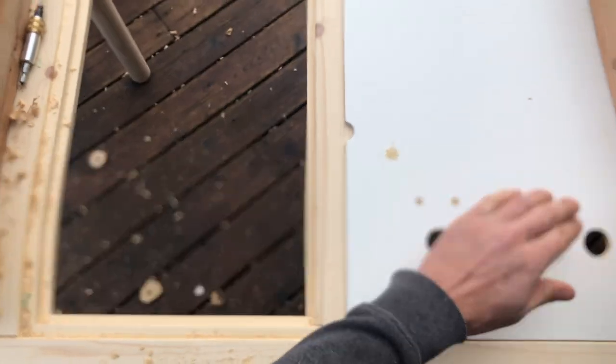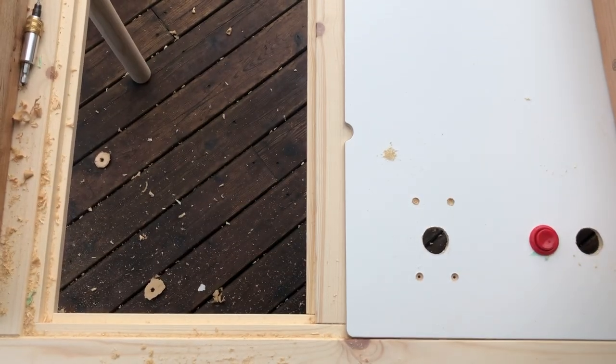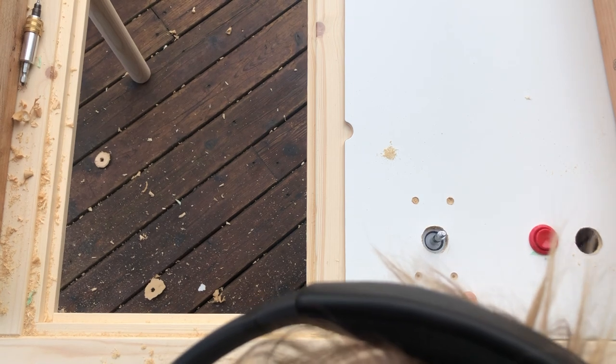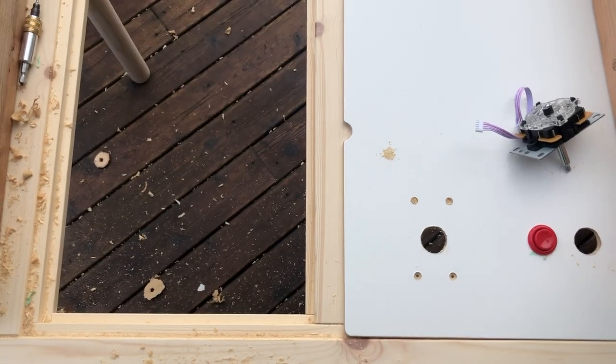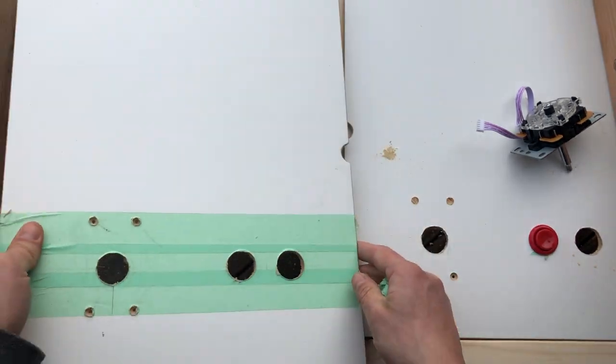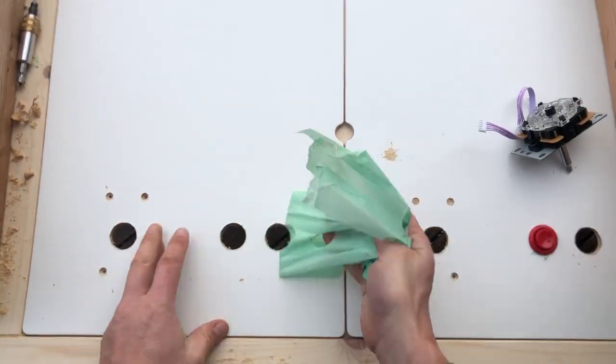The buttons will go like this. The joystick will come from the bottom and mount in the center. The last step is going to be to drill the holes for the menu system.